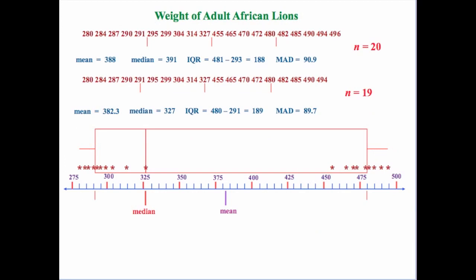Let's take that data set for our lions and adjust it just a little bit — let's say that we knock out the biggest of the male lions. Now we've got 19 values. Notice that there's very little difference in the mean absolute deviation and very little difference in the interquartile range. There really isn't a whole lot of difference in the average weight — 382.3 compared to 388. But look at the median: 391 versus 327.